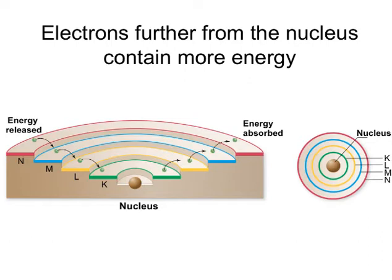The amount of energy transferred depends on the energy of the electron that is transferred. Not all electrons have the same amount of energy. Electrons that are closer to the nucleus of the atom have less energy than those located farther away. When an electron moves closer to the nucleus, it releases energy, as it moves from a high energy state to a low energy state. On the other hand, when an electron moves farther away from the nucleus, it requires the input of energy, as the electron is moving from a low energy state to a high energy state.